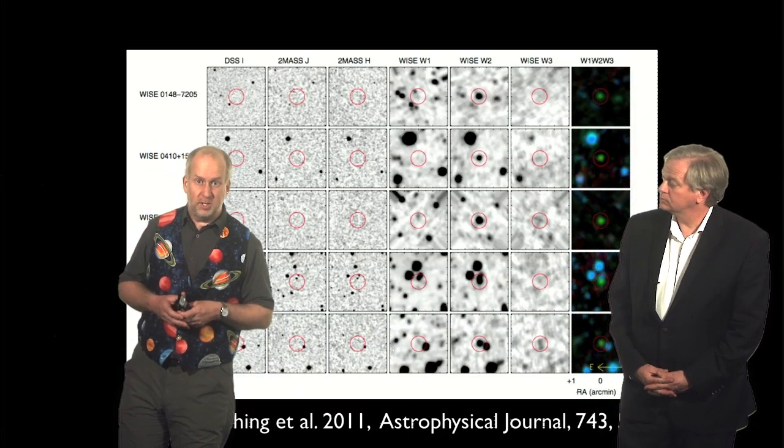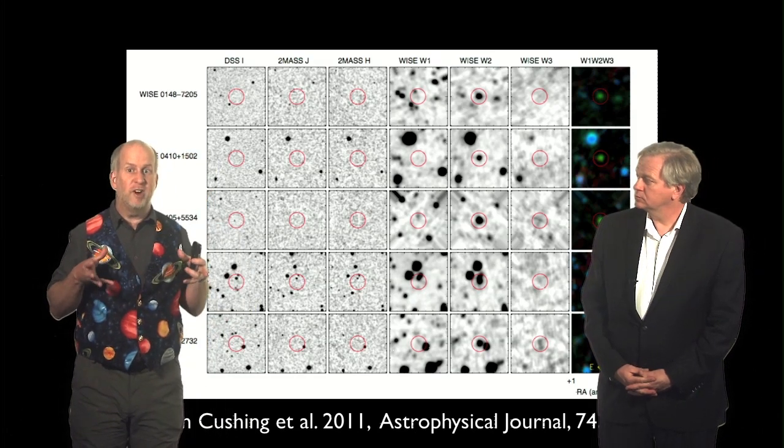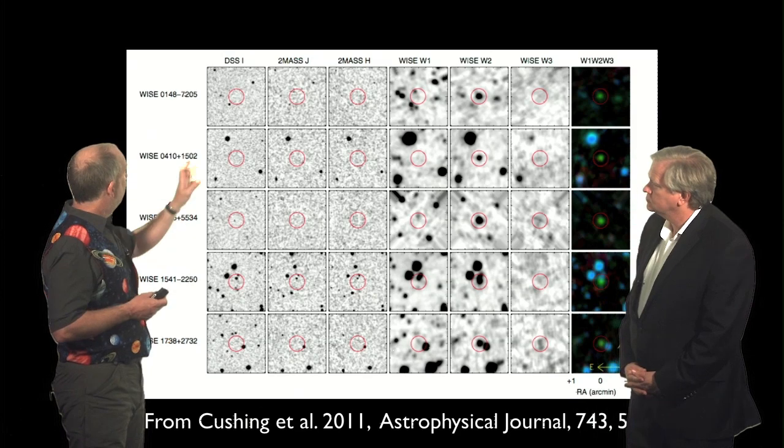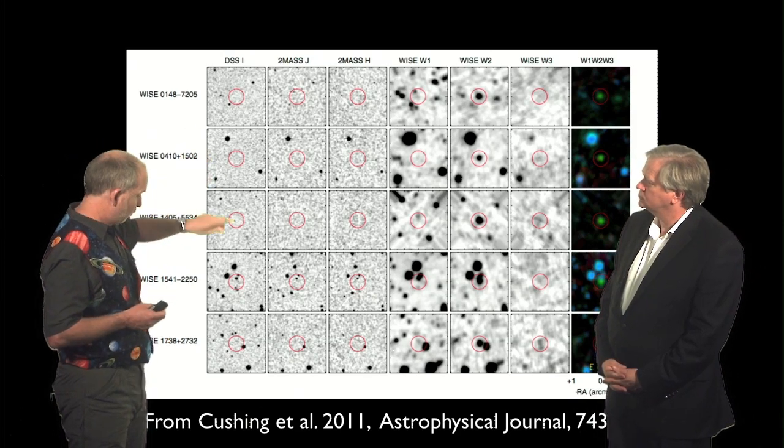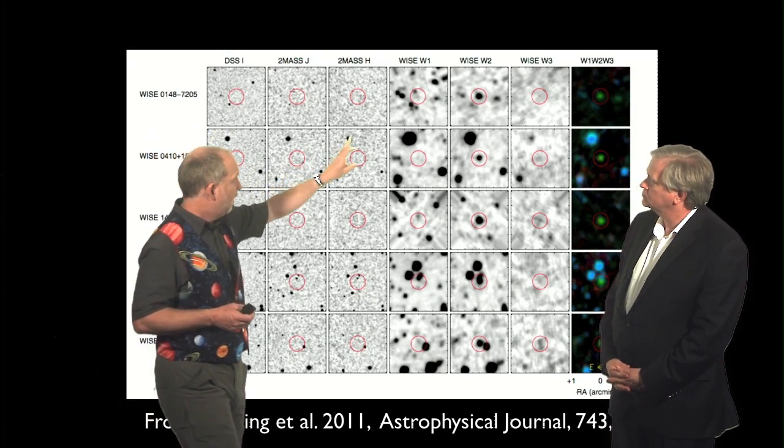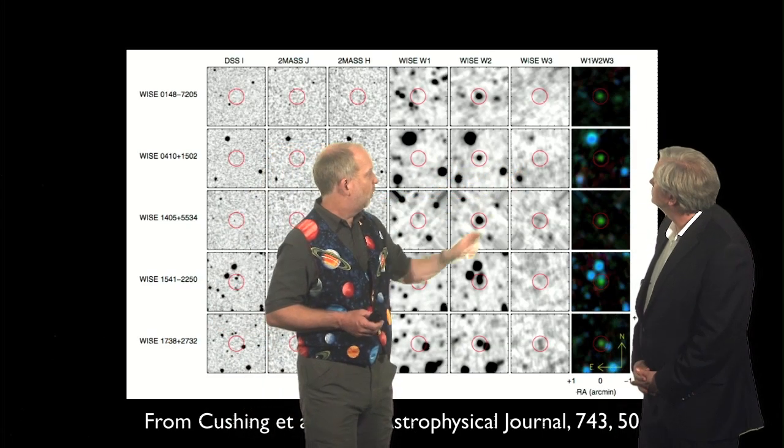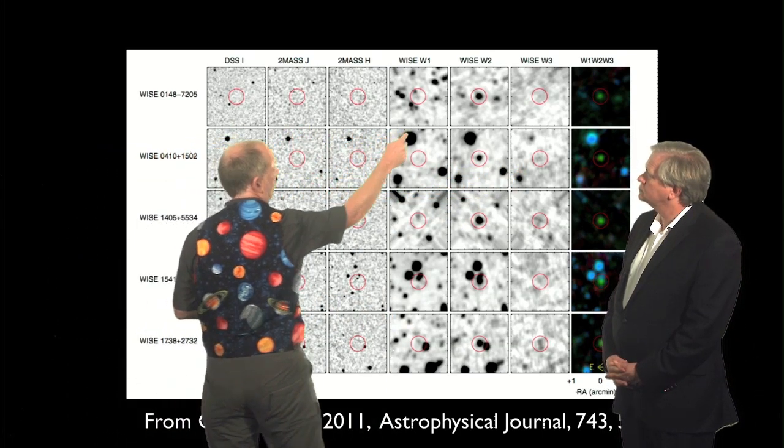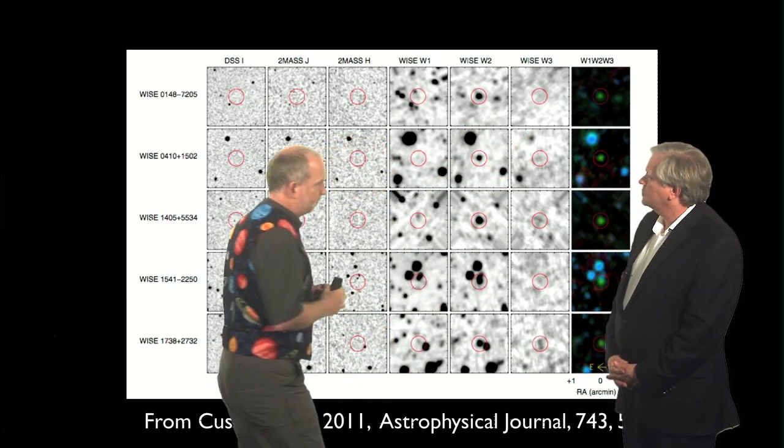So WISE has found a large number of these, and some of these brown dwarfs are very, very cool. They're what we call Y dwarfs. Here's how you spot these things. This is an image of the same part of the sky at a bunch of different wavelengths, starting in the optical and going out into the infrared observed by WISE. And what you see from one of these things is nothing, nothing, nothing, nothing, whoop, nothing.